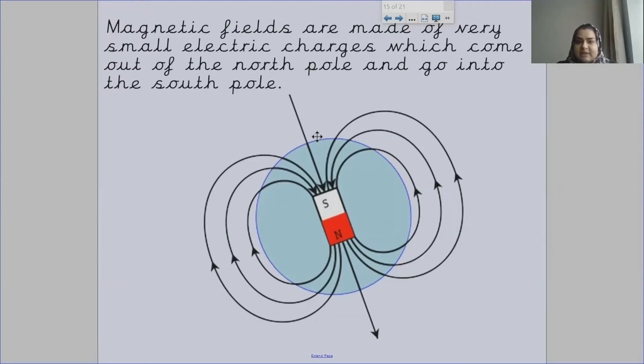Magnetic fields are made of very small electric charges which come out of the north pole and go into the south pole. So they come out of the north pole, the electric charges, and then they go into the south pole. Here you can see an example of the magnetic fields going in and out and around the magnet.